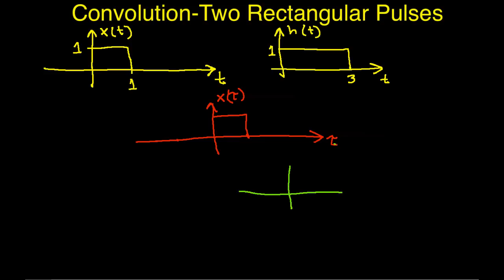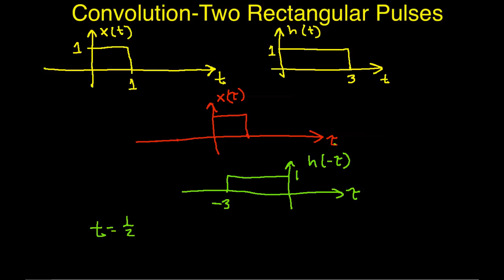We take h, flip it about the line tau equals 0, and it looks like this. For values of tau from minus 3 to 0, it has a magnitude of 1, and it's 0 for all other values of tau. When we plug in t, that shifts h of minus tau to wherever t is. Suppose we choose t equals 1/2. So h of t minus tau gets shifted — the point at tau equals 0 shifts to 1/2, and the point at minus 3 gets mapped to minus 2 and 1/2. For this value of t equals 1/2, h of t minus tau looks like this.